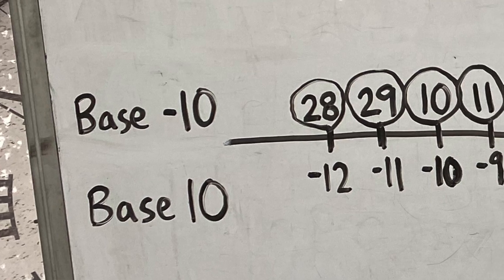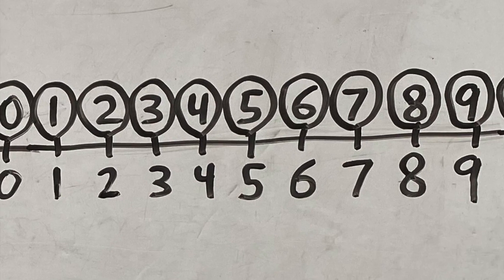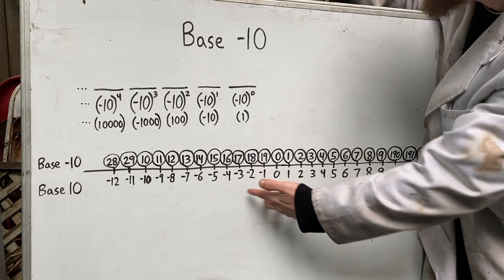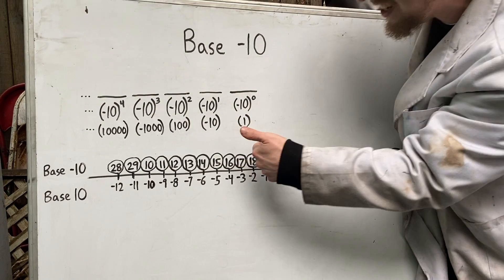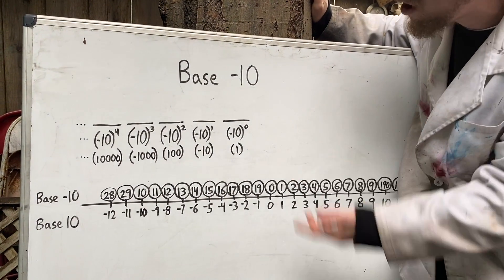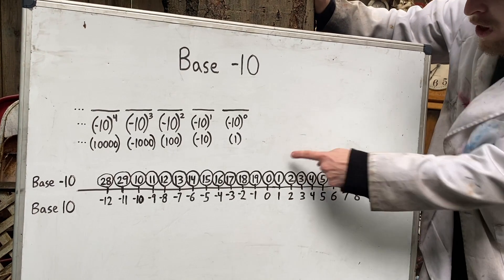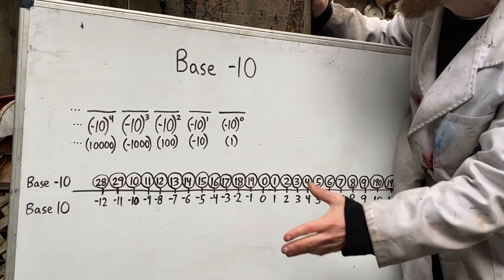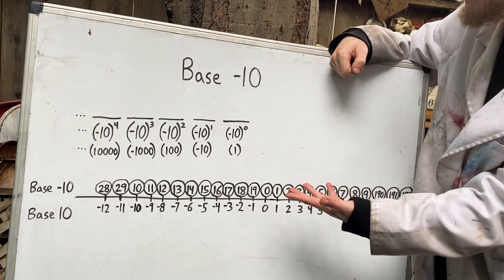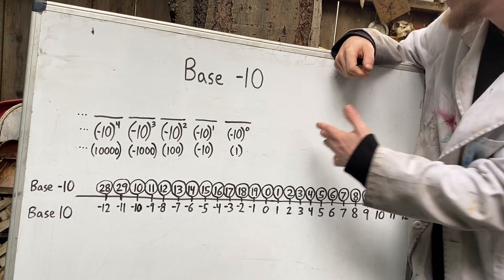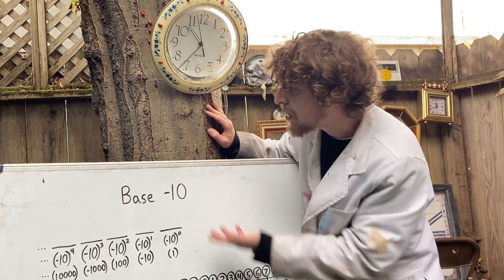Looking at a stretch of the number line with base negative 10 representations, it does look jumpy again, though there are longer stretches that appear ascending. Every single integer, including negatives, has a representation without needing any negative signs. Like before, any negative number has an even number of digits in its representation, and any zero or positive number has an odd number of digits. And although I've been building integers here, if I put a decimal point with more places representing negative powers of negative 10, I could make fractional quantities or even try to represent irrational numbers.